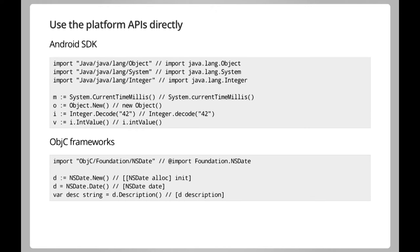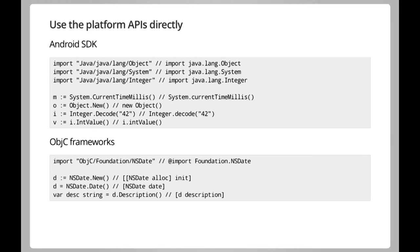The new feature is that you can now import Java packages and Objective-C frameworks directly in Go — similar to how you import uppercase 'C' in cgo to access C types. For Java, you use 'import Java' followed by the full package path. In an example with three types — Object, Integer, and System — you can call static methods, allocate new instances of a class, and call methods on them.